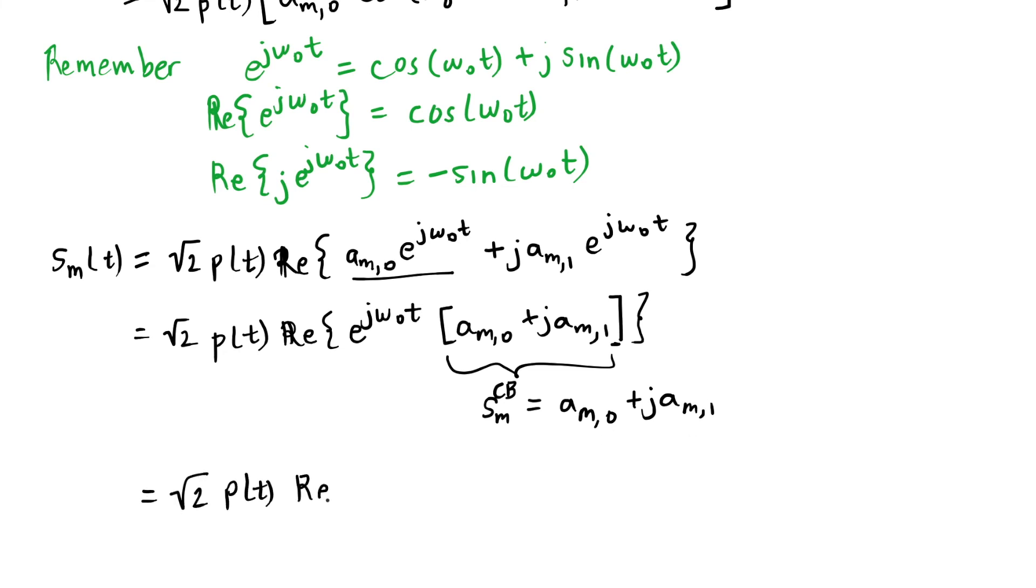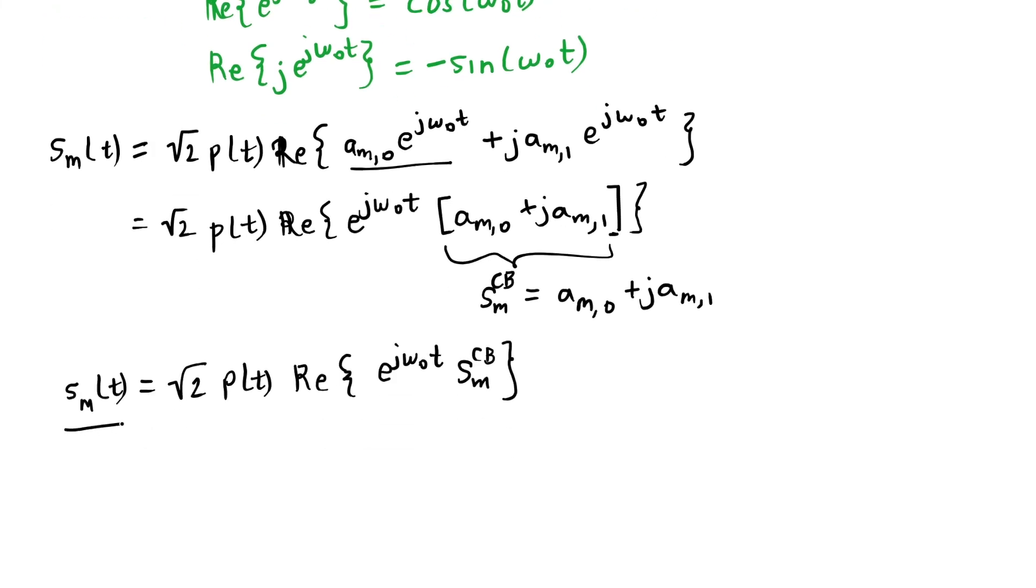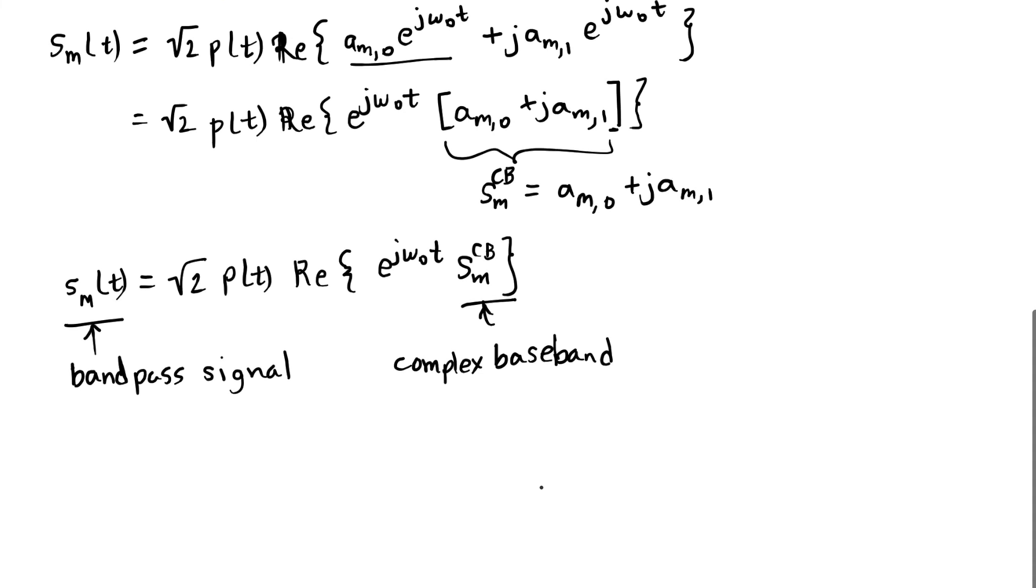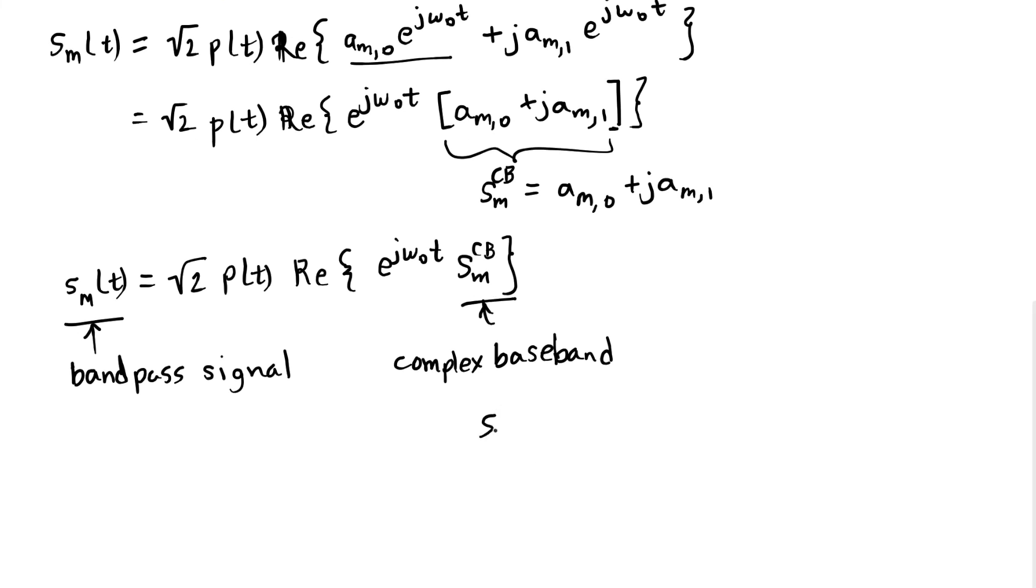So it's a single complex value that now we can write. So we have our what we would call just our normal symbol in the time domain, that would be the band pass, what we refer to now as our time domain signal, this term which we're calling our complex baseband.